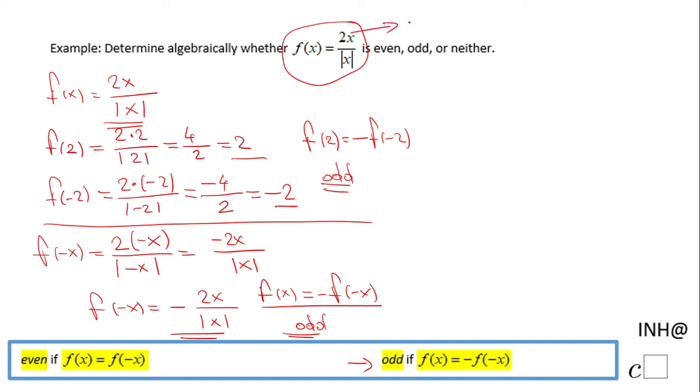If you take a look at this quotient, 2x is an odd function, absolute value of x is an even function, and a quotient of odd over even will always give you odd.